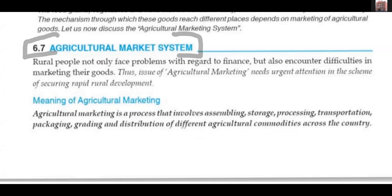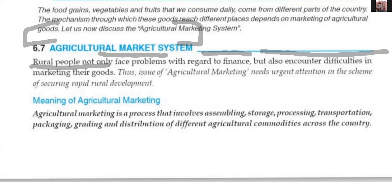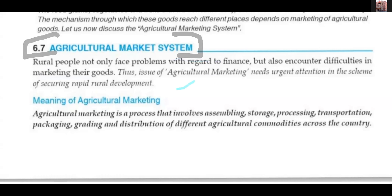Farmers can make their products and sell them. In agricultural marketing, we have to learn all the problems and solutions. Rural people not only face problems with regard to finance, but also encounter difficulties in marketing their goods. They arrange and produce, and then also face problems related to distribution and marketing of their goods. Thus, the issue of agricultural marketing needs attention in the scheme of securing rapid rural development. If you want to focus on rural development, then you must develop a good agricultural marketing system.